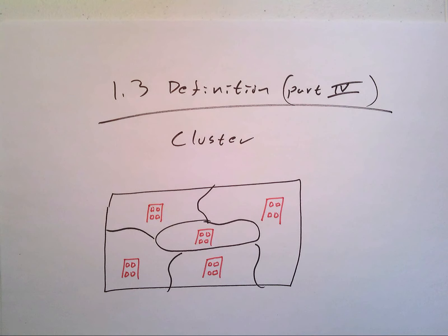1.3 definitions part 4, this time we're going to talk about cluster sampling. Now remember, everything comes down to money versus true randomness. Imagine if you invented a brand new MRI machine. Are you going to, in order to test this out, put this brand new MRI machine into every hospital in a single city? No, that would be way too expensive.